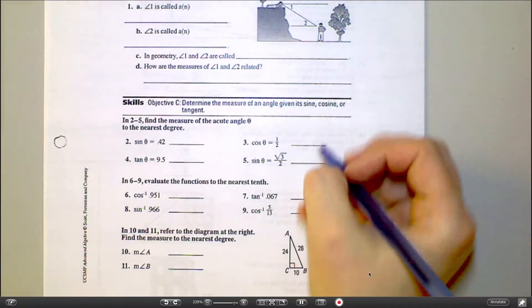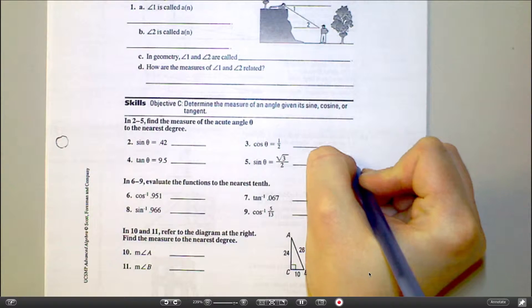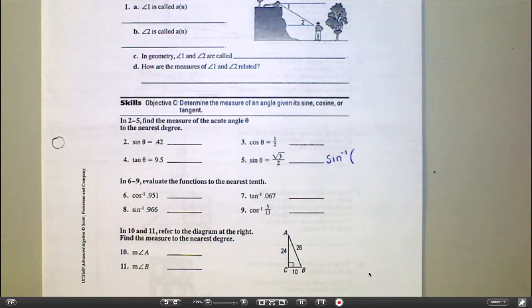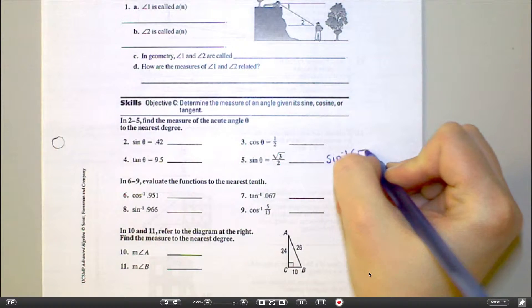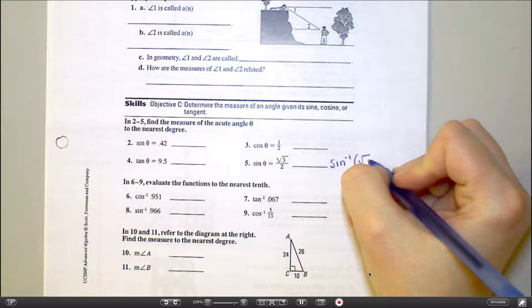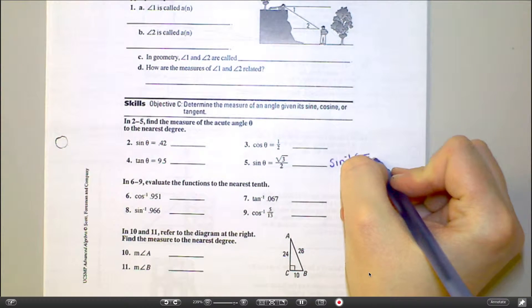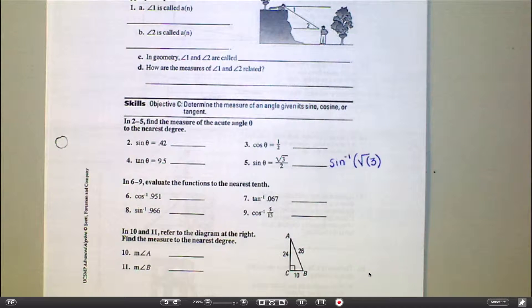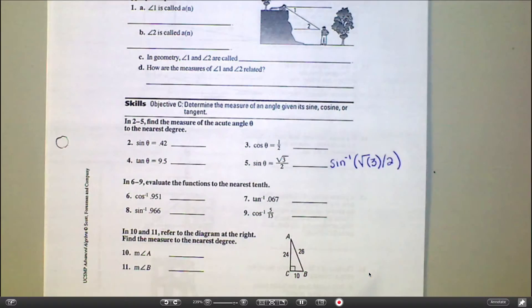You would type this in. I wish I had a calculator up here to show you, but I would type sine negative one, and it's going to open a parenthesis for you. I would hit square root, and usually in at least the older calculators, when you hit square root, another parenthesis will pop up. And you would just put the three inside that parenthesis and close it, because that's the only thing you want to take the square root of. So, divide by two, and then close that parenthesis.